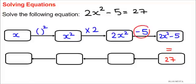Now opposite of negative 5 or minus 5 is plus 5 so 27 plus 5 gives me 32. Now opposite of multiply by 2 is divide by 2 so 32 divide by 2 gives me 16.